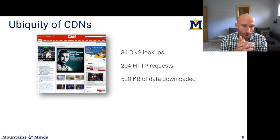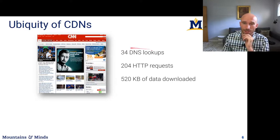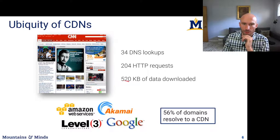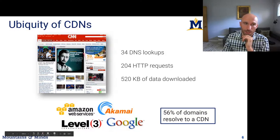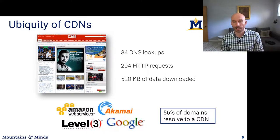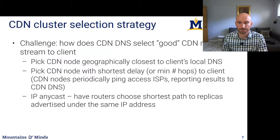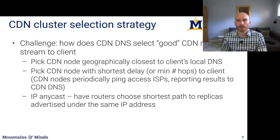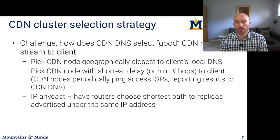CDNs are quite ubiquitous. For example, loading CNN.com results in 34 DNS lookups, many HTTP requests for different images and content, and a substantial amount of data downloaded — the majority of those requests served by CDNs. In fact, 56% of domains on that page actually resolve to a CDN, meaning even the HTML is being delivered from a content distribution network rather than CNN's own servers.